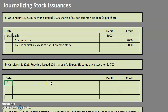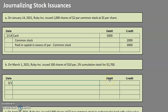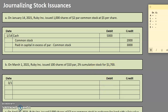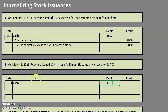Let's take a look at example B to practice this in another scenario. Ruby Incorporated is issuing 100 shares of $10 par, 2% cumulative preferred stock for $1,700. In this case, they're telling us we're issuing stock in exchange for cash, so we are receiving cash of $1,700. Cash is an asset and it's going up, so we debit cash. This time, they're giving us a total rather than a per-share amount. Preferred stock is what we are issuing — the preferred stock is increasing — and to increase a capital account, we credit preferred stock. Just like common stock, we value preferred stock at par: 100 shares at $10 per share equals $1,000.